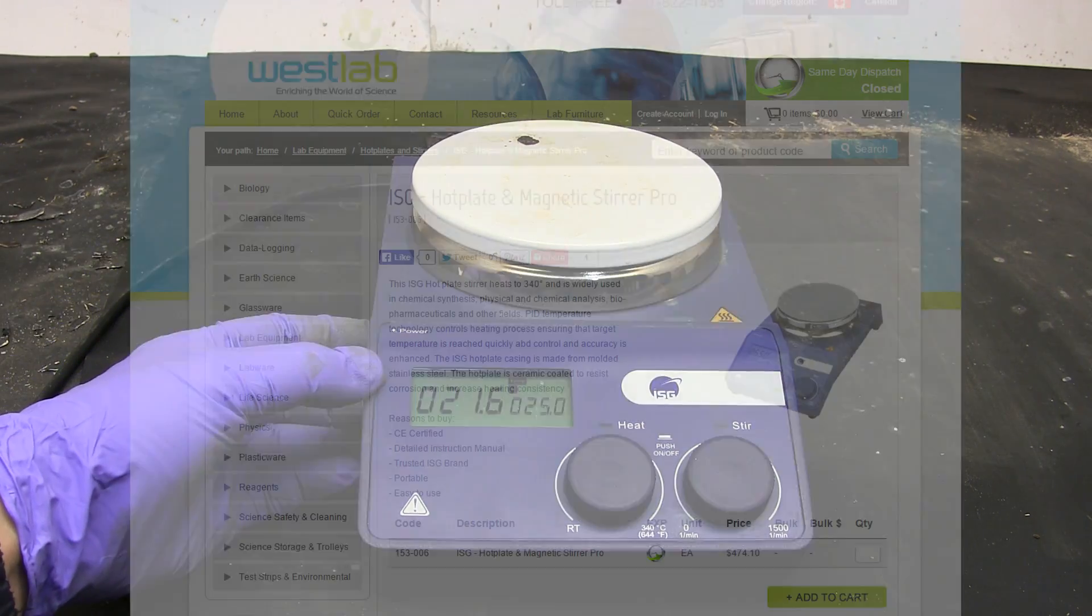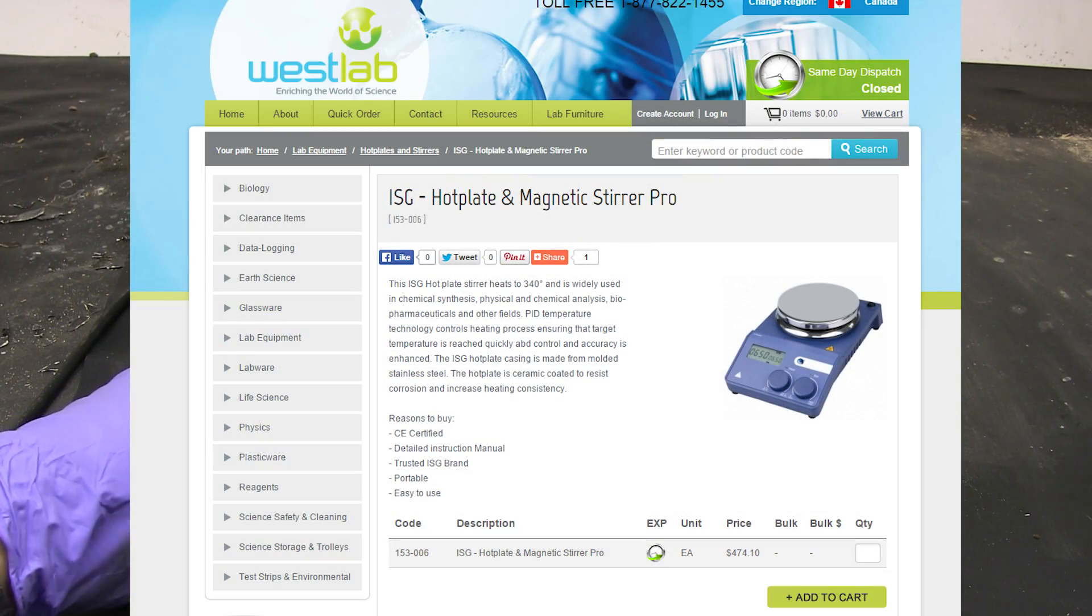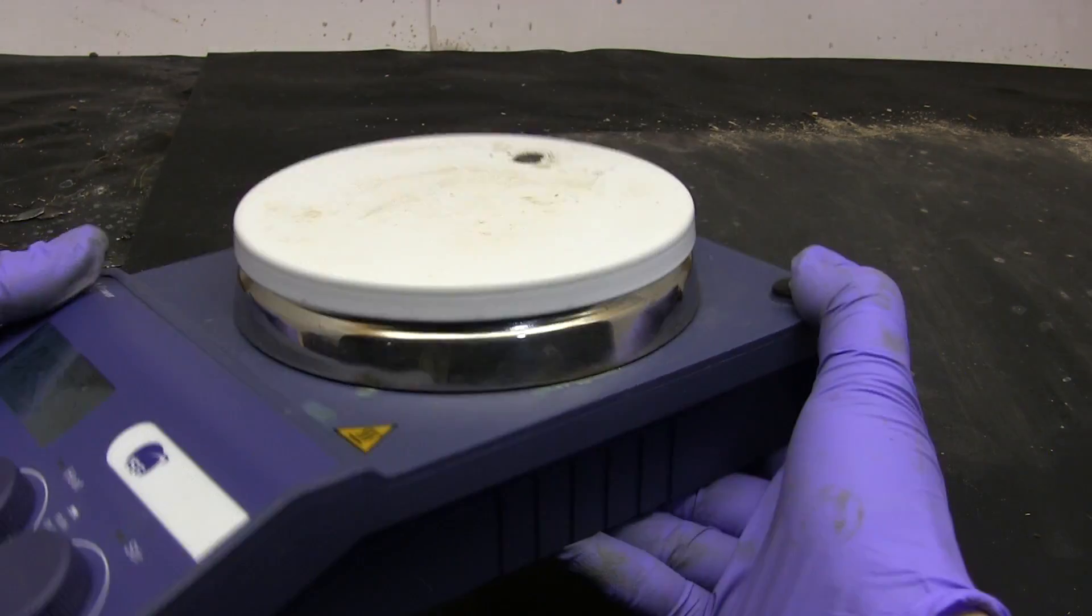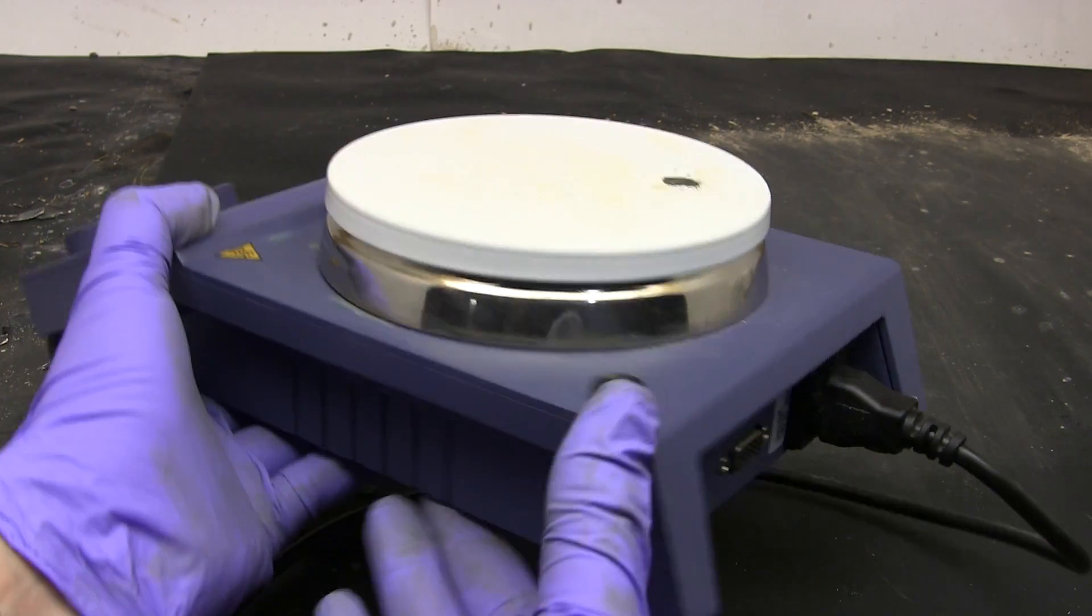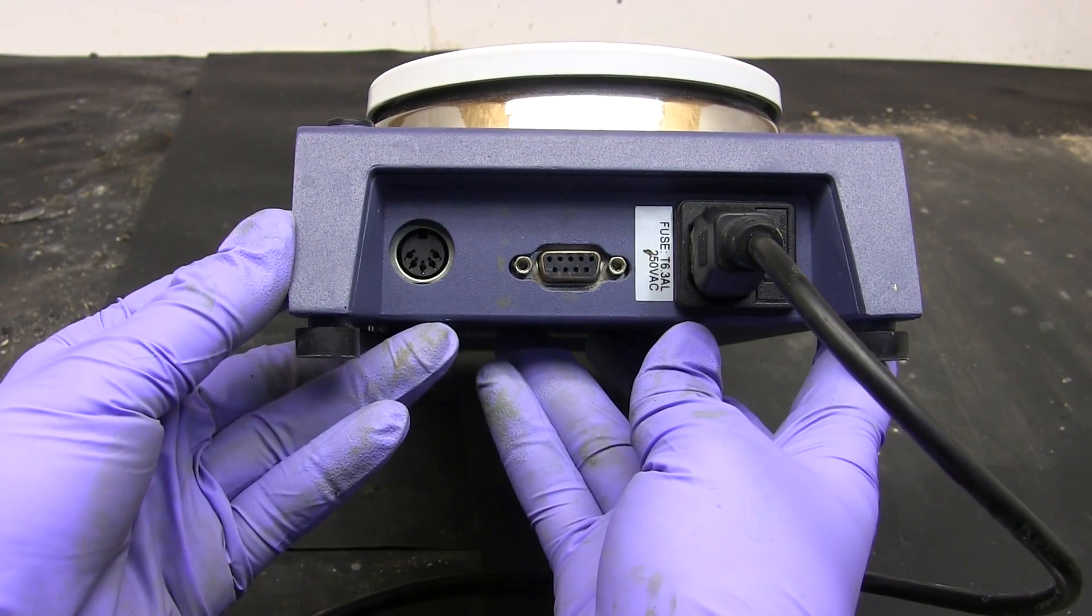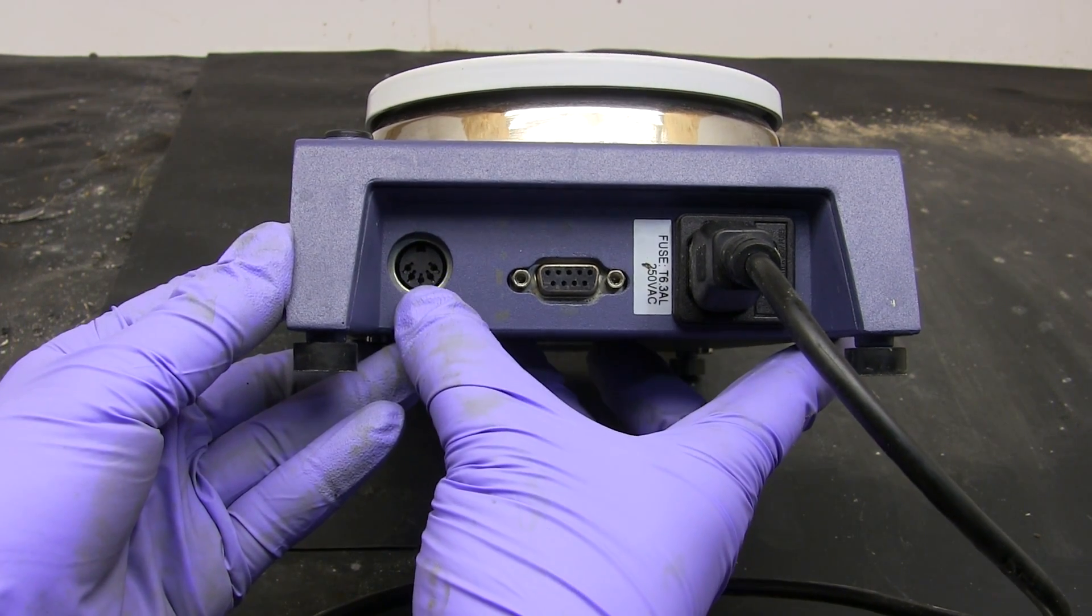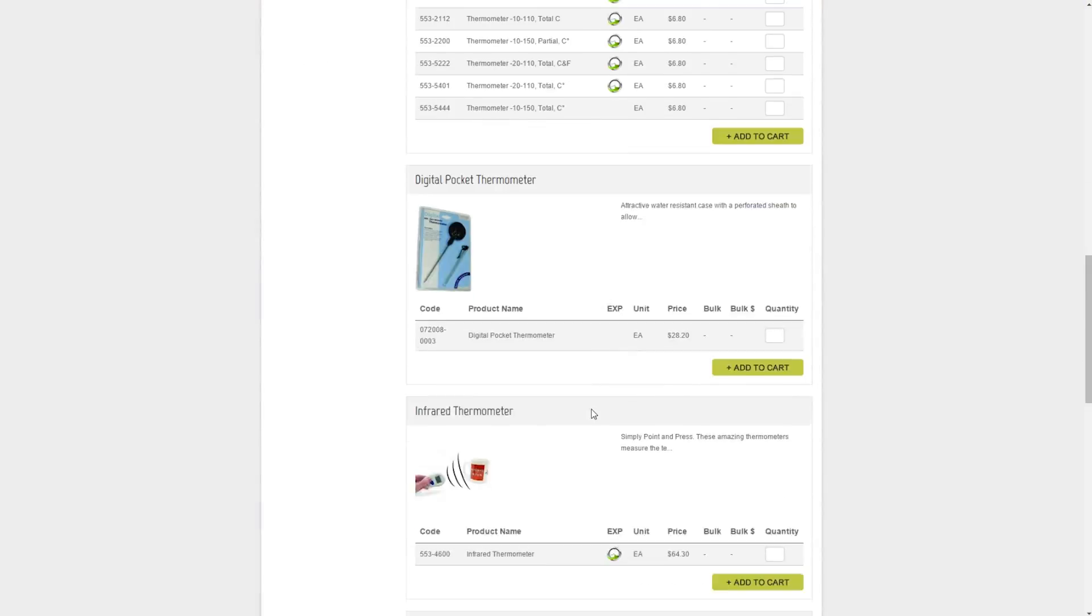What really pisses me off about my purchase though is that the website implies it has a thermometer probe, but I never received one. When I emailed the seller about this they never responded. The hotplate clearly has the required port for a thermometer probe but that's no good if the probe isn't provided. The website doesn't even list the probe for sale.